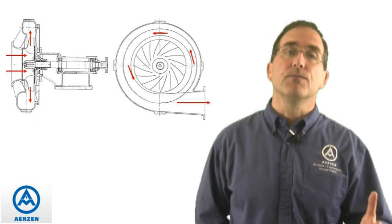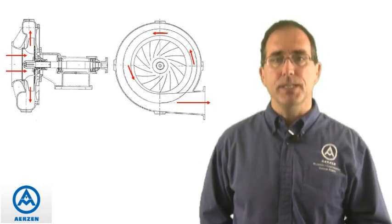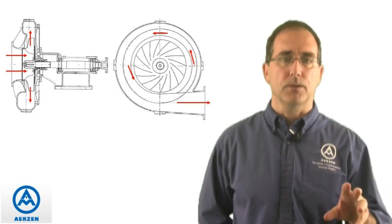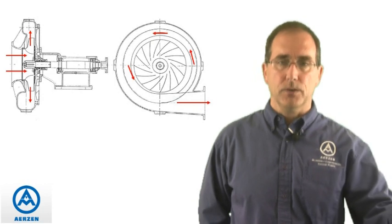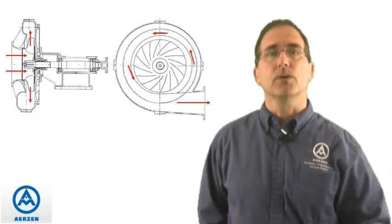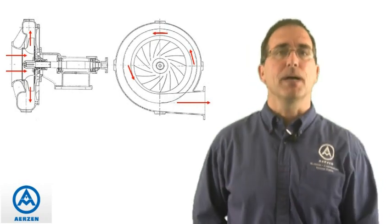The way a centrifugal compressor operates is through dynamic compression, where it converts kinetic energy into potential energy. As you can see on the diagram, the air comes in through the center of the impeller and gets flung out the outside diameter, imparting a velocity to that air, which in turn gets converted to pressurized air in the piping.